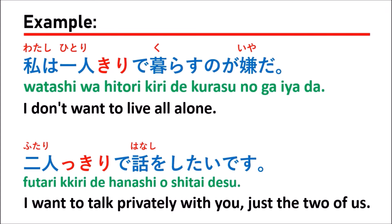The second example: 二人きりで話をしたいです, which means 'I want to talk privately with you, just the two of us.' Here we have futarikiri. Futarikiri has the same meaning and may include a small っ — you can say futarikiri with or without the small っ; it just has the same meaning. Kiri means 'cut out' — just only that thing.